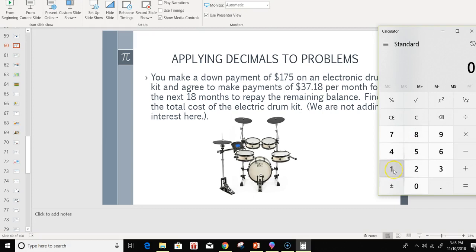On our calculator, we can put $175 down and then $37.18 times 18 months. That will be $669.24.